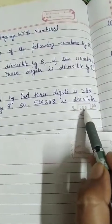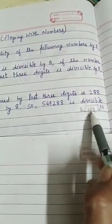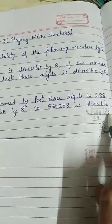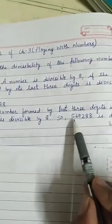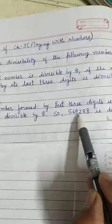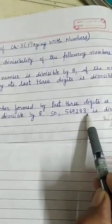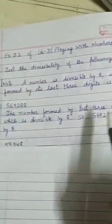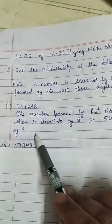It means 288 is exactly divisible by 8. So, 569,288 is also divisible by 8. Understand?